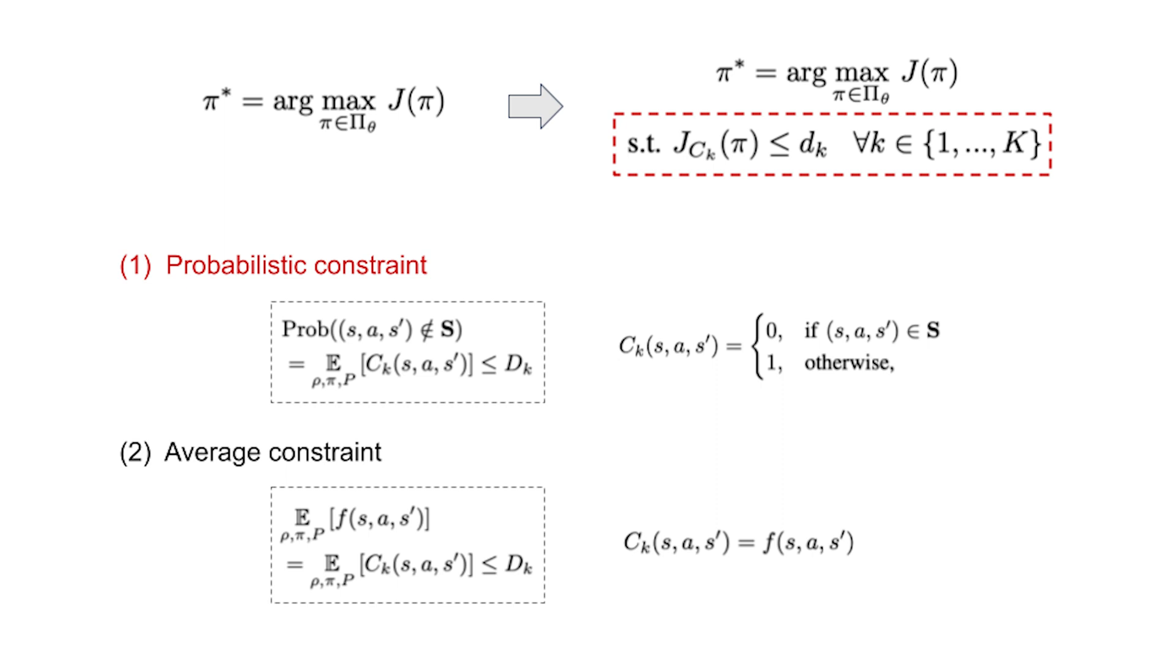We use two constraint types: probabilistic and average constraints. A probabilistic constraint is used to limit the probability of the robot encountering an undesirable event.